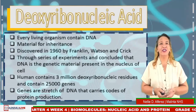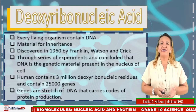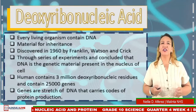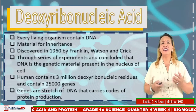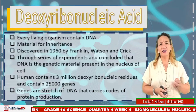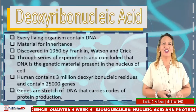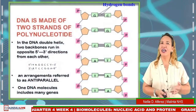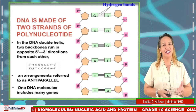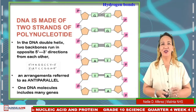Let us discuss deoxyribonucleic acid. Every living organism contains DNA. It is the material for inheritance. It was discovered in 1960 by Franklin, Watson, and Crick through a series of experiments, concluding that DNA is the genetic material present in the nucleus of cells. Humans contain 3 billion deoxyribonucleotide residues and contain approximately 25,000 genes. Genes are a stretch of DNA that carries the code for protein production. In the DNA double helix, two backbones run in opposite 5-prime to 3-prime directions, referred to as antiparallel.